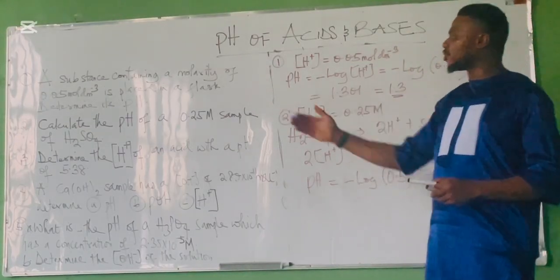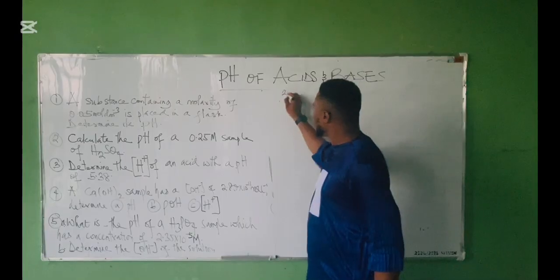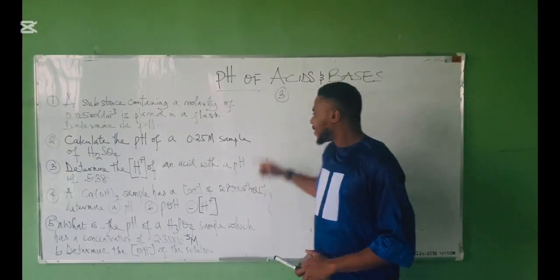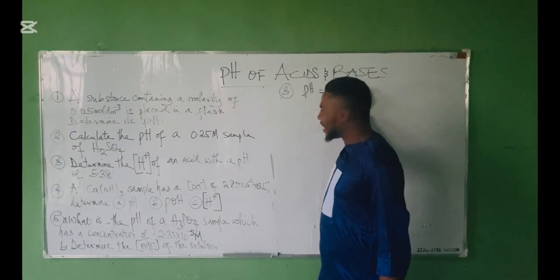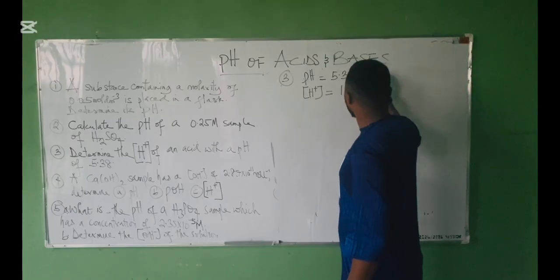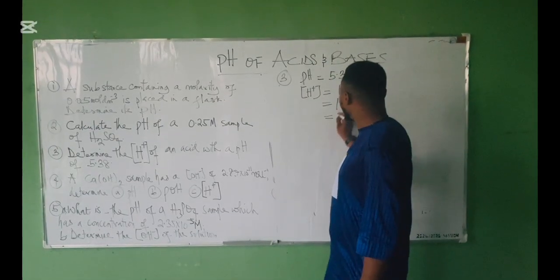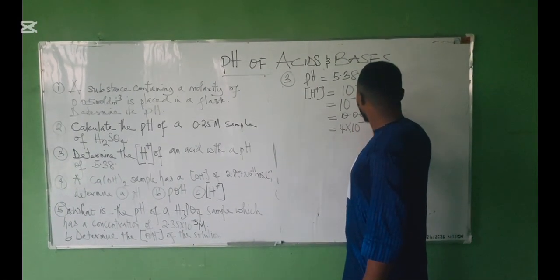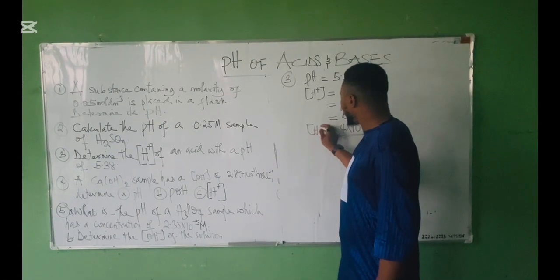Question 3: Determine the hydrogen ion concentration of an acid with a pH of 5.38. When you have pH and are told to find [H⁺], use: [H⁺] = 10^(−pH) = 10^(−5.38). Calculating this gives 0.00004, which is approximately 4 × 10⁻⁶ mol/L. That is your hydrogen ion concentration.